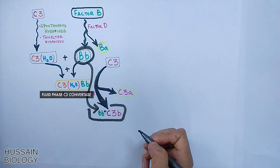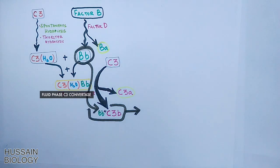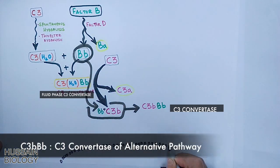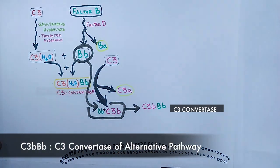Thus making a fully fledged stable C3 convertase in the form of C3bBb. So now we have C3 convertase of alternative pathway, the stable one.